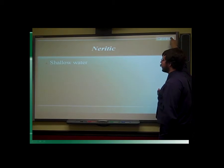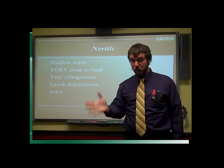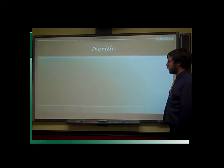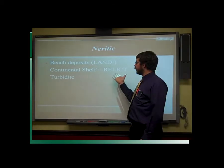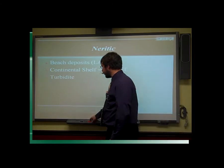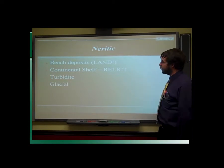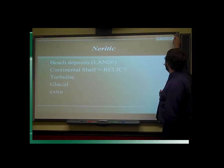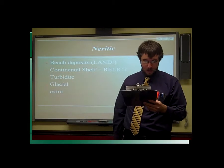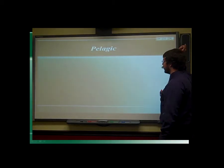Neritic sediments: the water is going to be shallow and warmer, and you're more likely to find lithogenous sediments deposited very quickly. Larger pieces are more likely to be found in your neritic zone because it's not very far out — these are things that would need a lot more energy to carry them. You tend to find beach deposits and things on the land. Things found on the continental shelf are called relict sediments — think relics of the past. You'll also find turbidite deposits, which are neuritic because they're deposited from the slope to the rise. Glacial sediments are very commonly neritic. It's worth noting that relict deposits are in the ballpark of 3,000 to 7,000 years old.